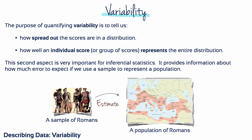Variability, along with shape and central tendency, allows us to describe the distribution. It tells us whether the scores are clustered close together or are spread out over a large distance. Variability also measures how well an individual score or group of scores represents the entire distribution. This aspect of variability is very important for inferential statistics, where relatively small samples are used to answer questions about populations. In this way, variability provides information about how much sampling error to expect.